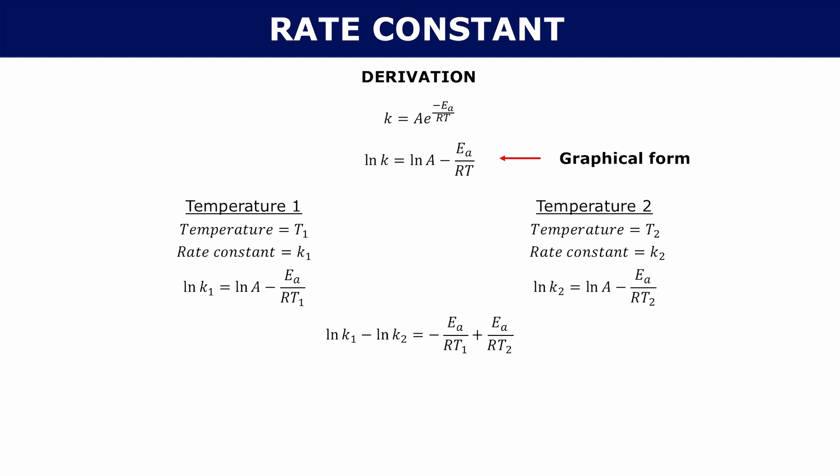You can combine them by subtracting: natural log of k1 minus natural log of k2 equals minus Ea over RT1 plus Ea over RT2, which simplifies to natural log of k1 over k2 equals Ea over R times 1 over T2 minus 1 over T1.